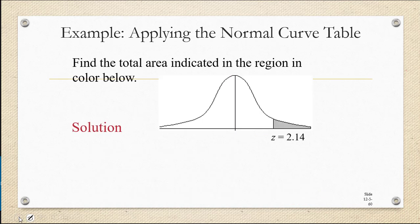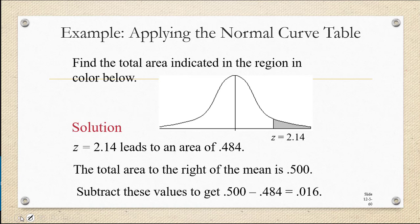Here's another scenario. In this case, we're given a positive z-score, but we want to find the area to the right of it. If we look up z equals 2.14, this gives us an area of 0.484, which is referring to the area between 0 and the z-score of 2.14. So this area here is 0.484, but we want the area to the right of it.